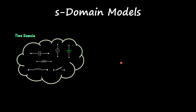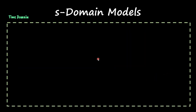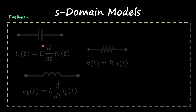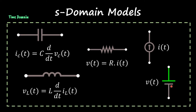You can see s-domain models simply as a way of going to your time domain and substituting components — capacitors, resistors, voltage and current sources — with their respective Laplace components using this Laplace transformation. The components we're going to focus on are capacitors, inductors, resistors, current sources, voltage sources, and step inputs, which are normally represented by a switch in a circuit.